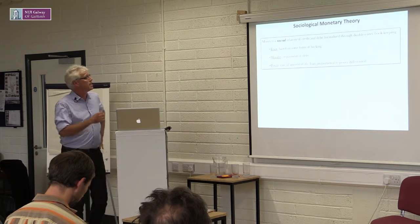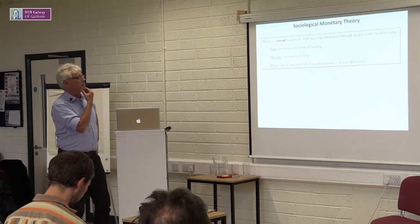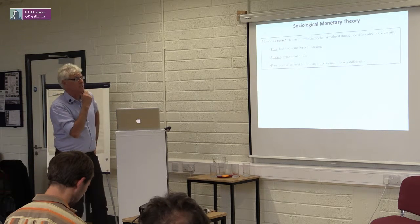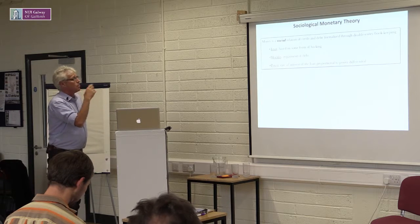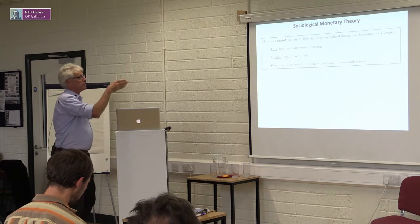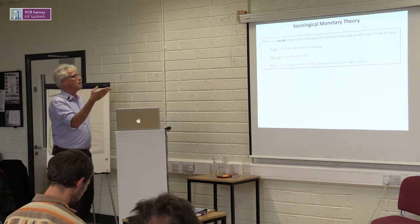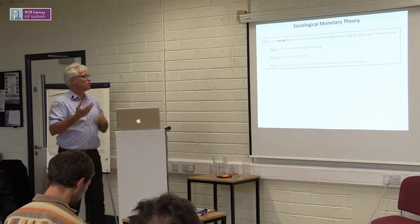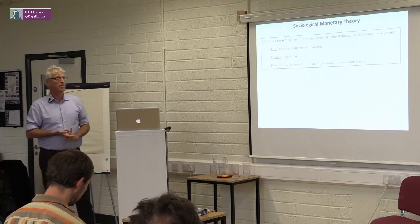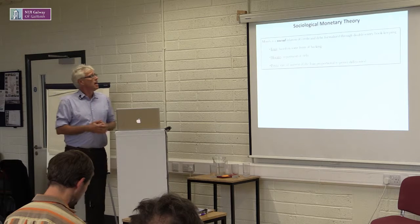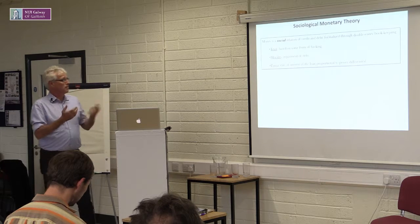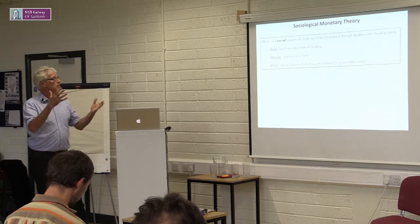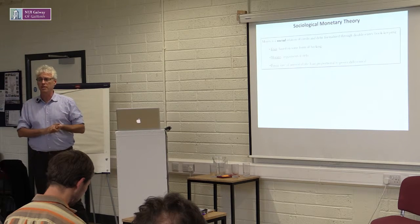So how do we think of this? Money is a social relation of credit and debt, which is formalized through the double-entry bookkeeping method. And why is it social? Because it's based on trust — so it's based on some form of backing — so it's both trust and confidence that the backing is there. Morality: you have to repay your debts. And power: the rate of interest of the loan is proportional to the power differential.